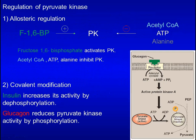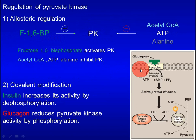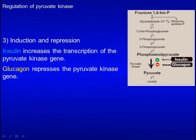Pyruvate kinase is subject to three types of regulation. First, it is an allosteric enzyme: fructose-1,6-bisphosphate (the product of PFK1) activates it, while acetyl-CoA and ATP inactivate it. Second, similar to glucokinase and PFK2, insulin activates this enzyme by dephosphorylation, and glucagon inhibits it by phosphorylation. Third, similar to glucokinase and PFK1, insulin increases and glucagon represses transcription of the pyruvate kinase gene.